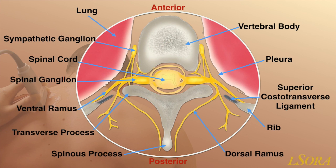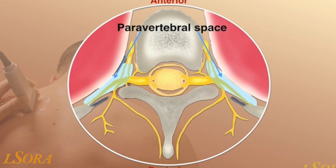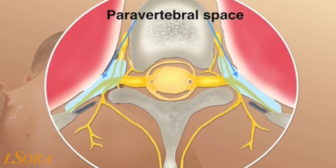This is a cross-sectional slice at the upper thoracic level. You will identify the spinal cord giving off the left and right spinal nerves with the ventral ramus and the dorsal ramus illustrated. The costo-transverse ligament runs from the rib below to articulate with the transverse process above, providing the gateway into the paravertebral space. Note the close proximity to the sympathetic ganglion and the pleura laterally. The triangular-shaped paravertebral space is highlighted here.